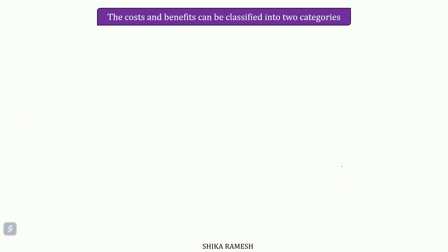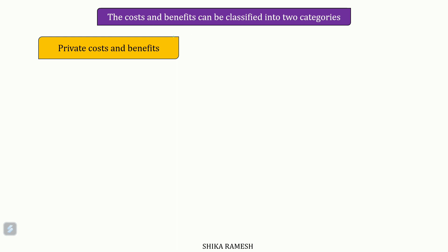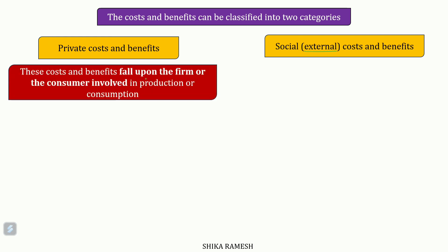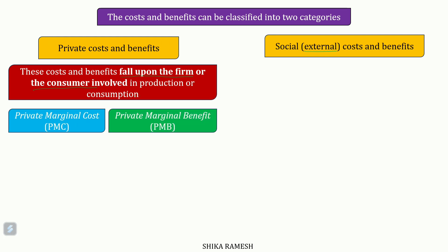The supply curve represents the cost to the society and the demand curve represents the benefits enjoyed by the society. Generally, costs and benefits can be classified into two categories: private costs and benefits, and social costs and benefits, which are also termed external costs and benefits. Private costs and benefits fall upon the consumer or the firm involved in the consumption or production activity, and can be further divided into private marginal cost and private marginal benefit.